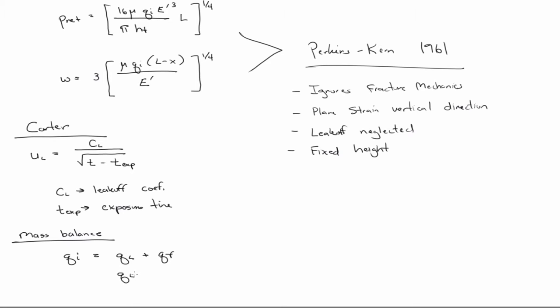So, Cl is the Leakoff rate over the whole fracture, QF is the volume rate of change.